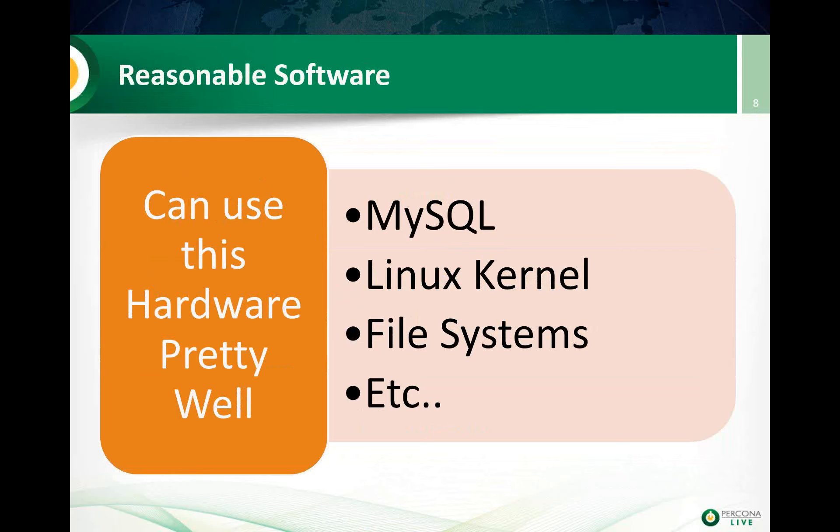We also have changes in software — MySQL, the Linux kernel, file systems — all improved to get better use of this powerful hardware. A few years ago we were battling MySQL being able to utilize four cores effectively, and using Percona Server you could get double performance or even more. Now, if you look at the most recent MySQL releases, unless you have some very exotic workload, it already scales very well when it comes to CPU cores, amount of memory, or powerful IO storage.